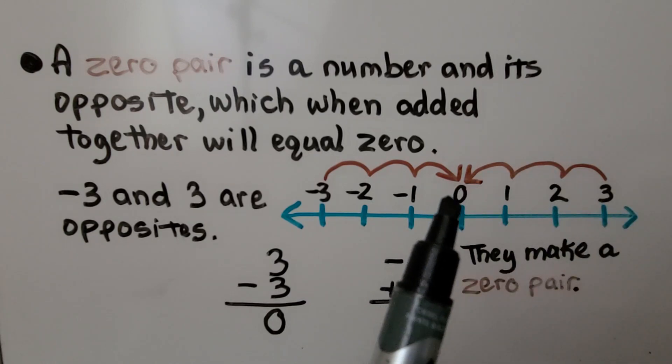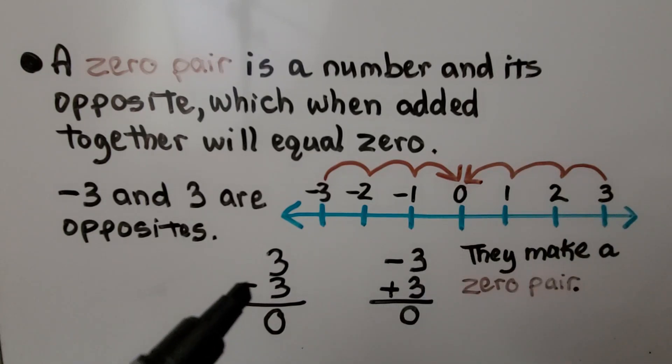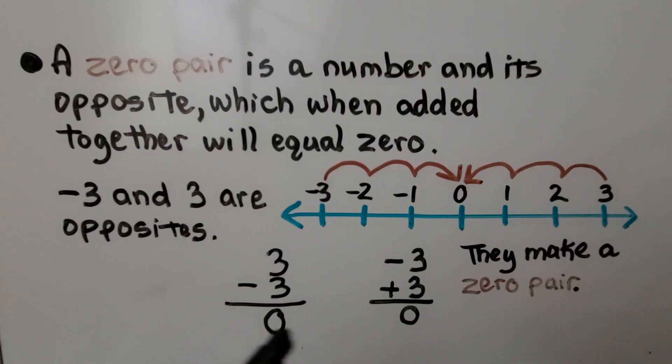When we take away 3, we get to zero. 3 and a negative 3 make zero, and if we have negative 3 and add 3 to it, we're at zero. They make a zero pair.